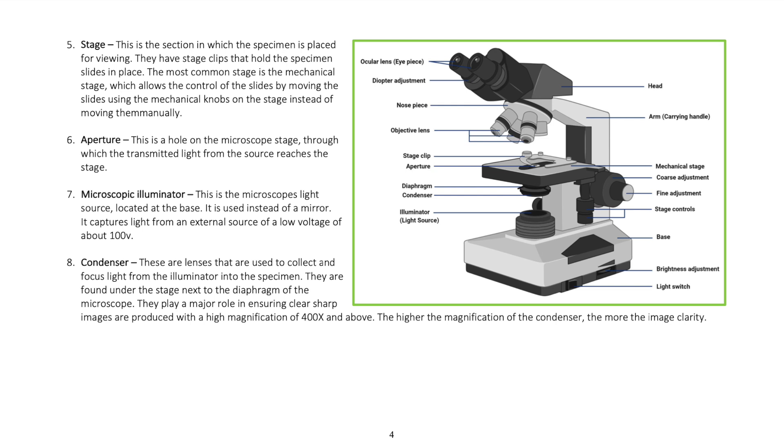The condenser consists of lenses that are used to collect and focus light from the illuminator into the specimen. They are found under the stage next to the diaphragm of the microscope. They play a major role in ensuring clear, sharp images are produced with a high magnification of 400 times and above. The higher the magnification of the condenser, the more the image clarity.